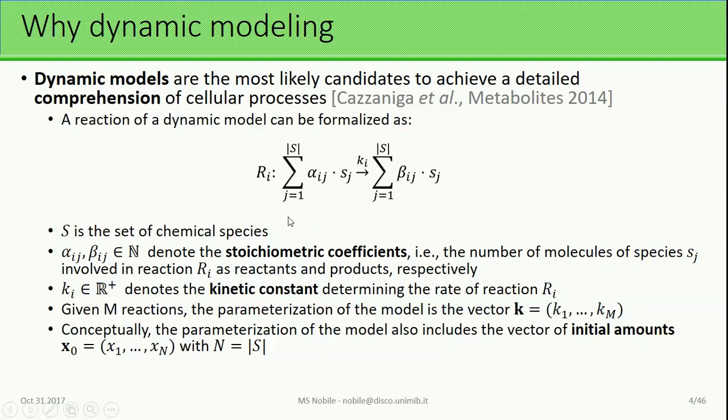In reaction-based modeling, we have a set of reactions that involve a set of chemical species. We have information about how these chemical species are converted into other chemical species, with a specific stoichiometry — the specific number of molecules involved in each reaction. Each reaction has a number associated to it called the kinetic parameter, which ultimately determines the rate of the reaction. We need all this information, plus the initial amounts of the system, in order to perform a simulation.